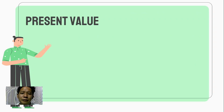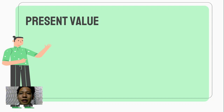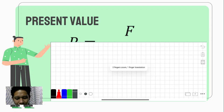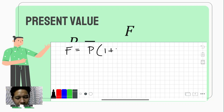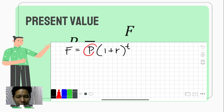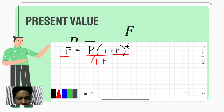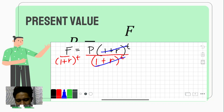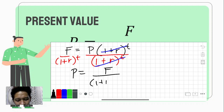Not only the future value can be computed using the formula — we can also find the principal or present value, provided the future value is given. The present value may be computed using P equals F over one plus r raised to t. This formula comes from the future value formula F equals P times one plus r raised to t. We simply divide both sides by one plus r raised to t to isolate P. That's how simple the derivation is.